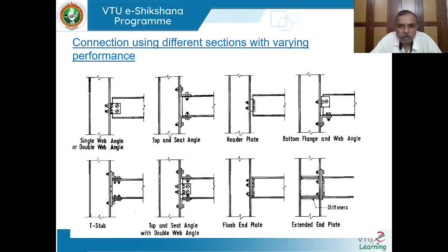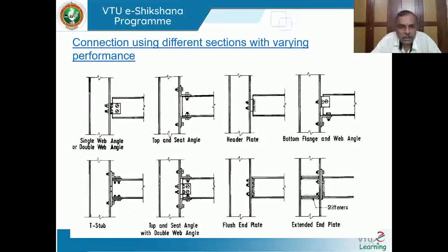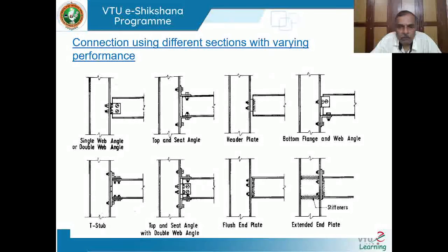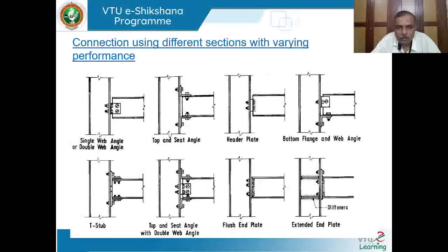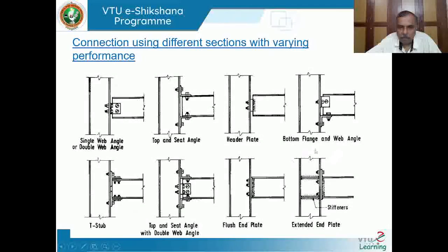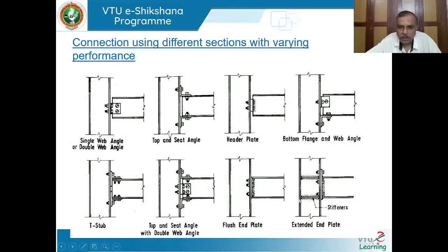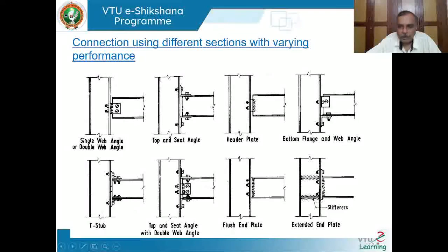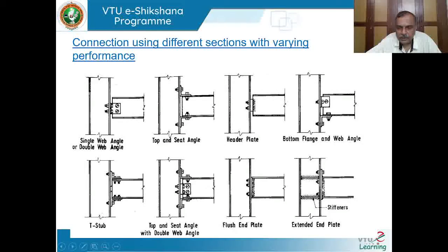Beam-to-column connections can be formed in different ways: using bolts, combinations of weld and bolt, and different connector types such as angles, plates, and T-sections, as well as end plates. Sometimes the column web must be strengthened with an extended end plate to increase the moment-carrying capacity of the connection and prevent secondary web failure when the beam resists moment.